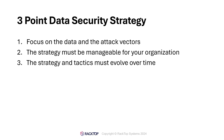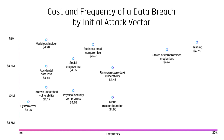I took the 2023 IBM Cost of a Data Breach report and created a slide showing the damage done and cost to the organization for different types of attacks versus how frequently they're used as an initial attack vector. Phishing is very damaging in terms of cost and is also used very frequently, followed by stolen or compromised credentials.